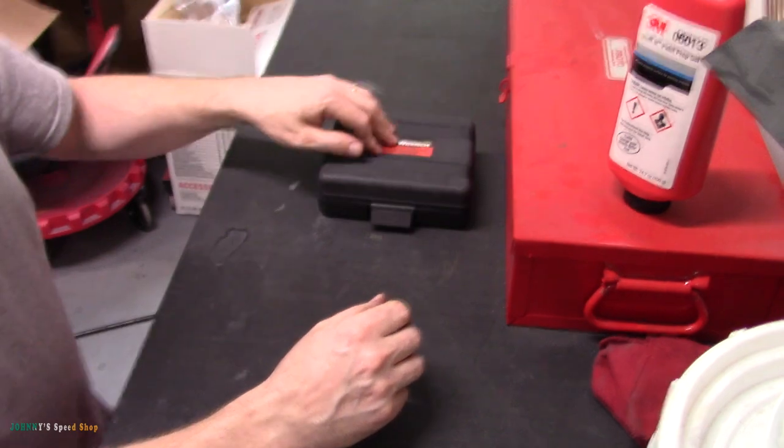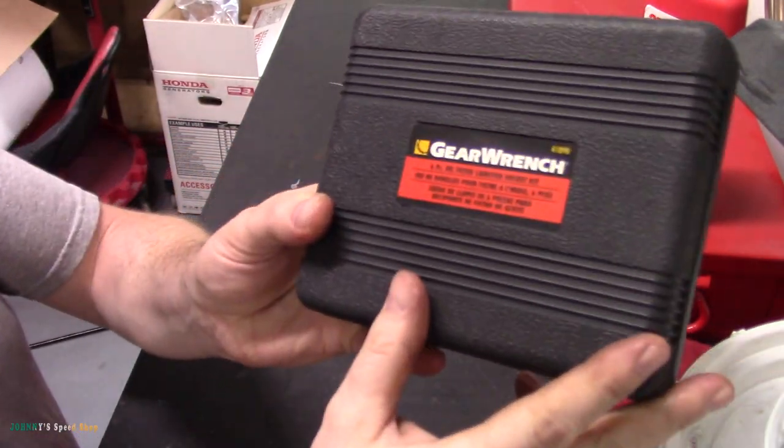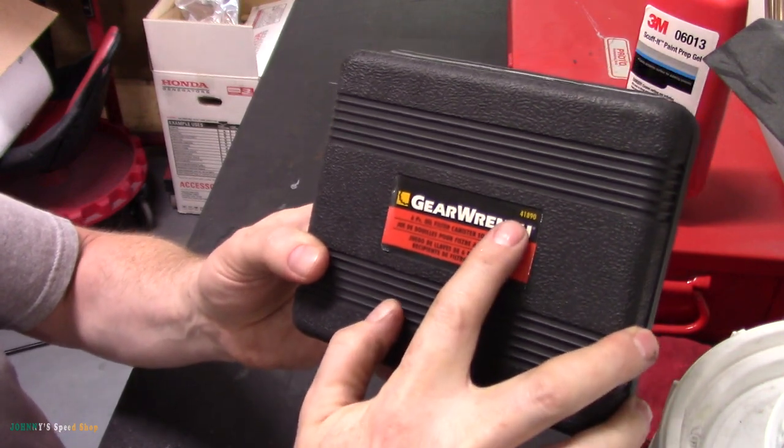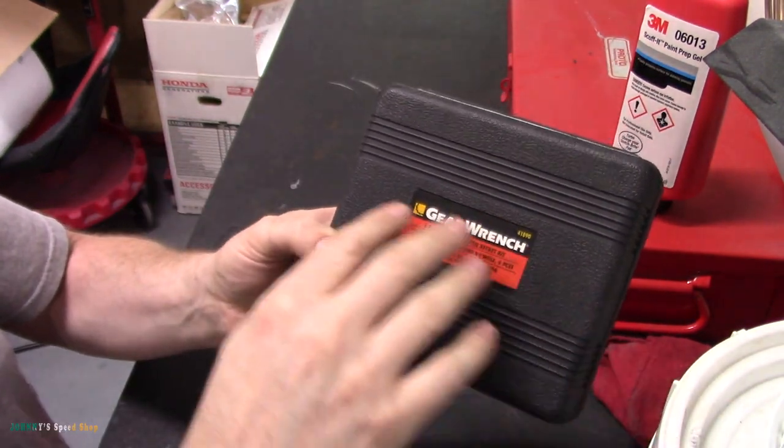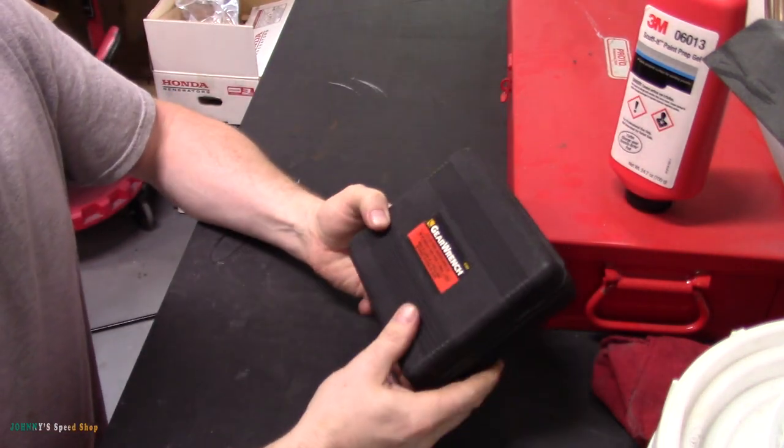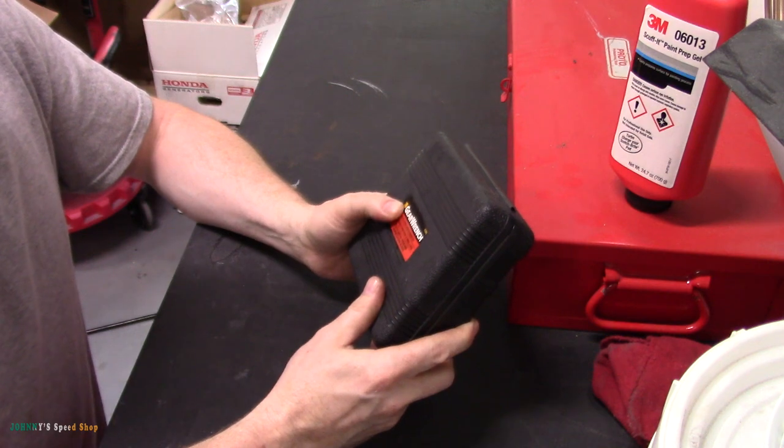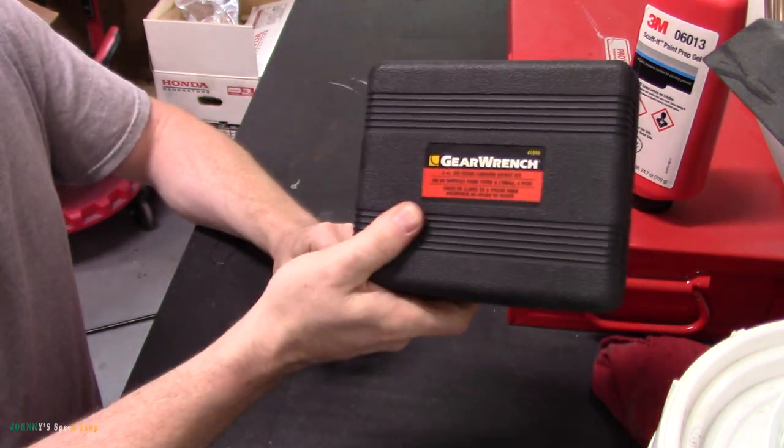These are made by GearWrench, here's the sticker, part number is 41890. I cannot remember what I paid for these because it was when I was doing all the Audi stuff, 5, 6 years ago, I just don't recall, but I'll put a link in the description.